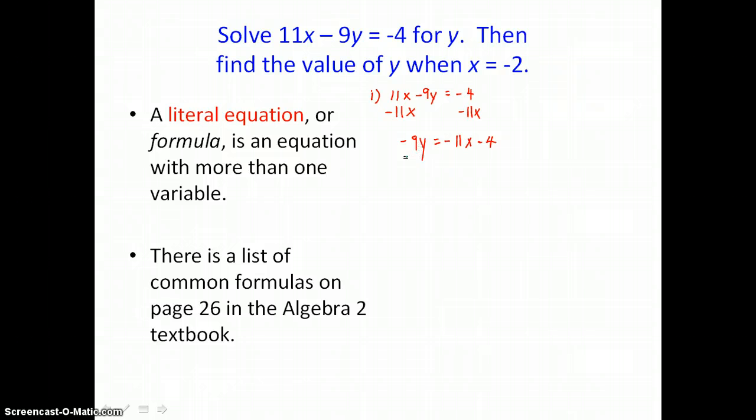Now we need to undo the multiplication to get y completely alone. So we'll divide both sides by negative 9, distributing on the right, so we're really dividing every term by negative 9. And simplify, so we have 1y on the left, negative divided by negative on the right leaves 11/9x, and another negative divided by negative leaves a positive 4/9.